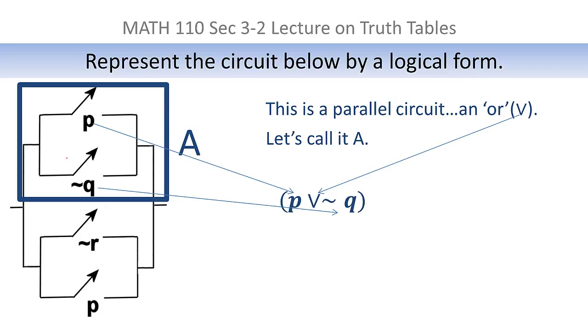Then capital A, which is the parallel circuit, is an OR, and you're ORing this statement, P, goes here, with this statement, not Q. So that would go here, so you're ORing the top, which is a P, and the bottom, which is not Q.